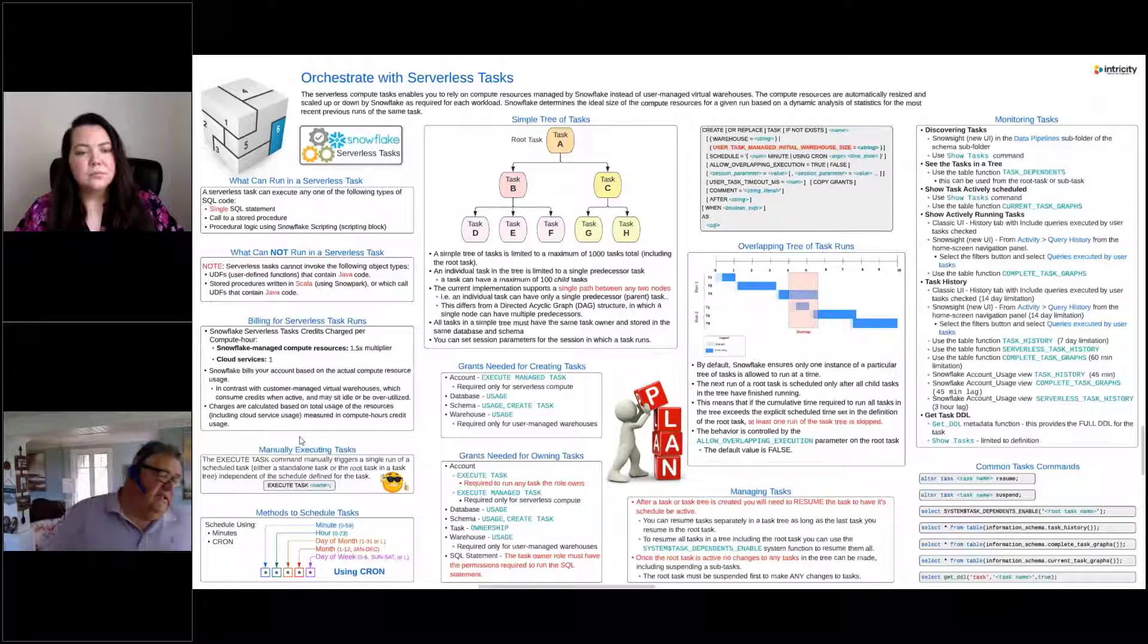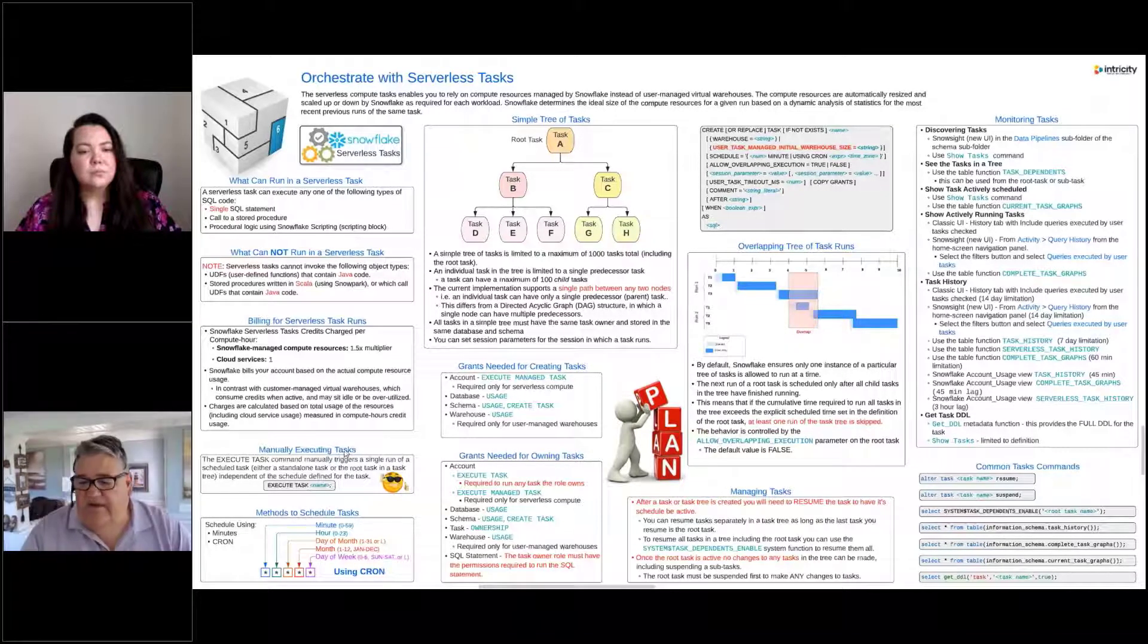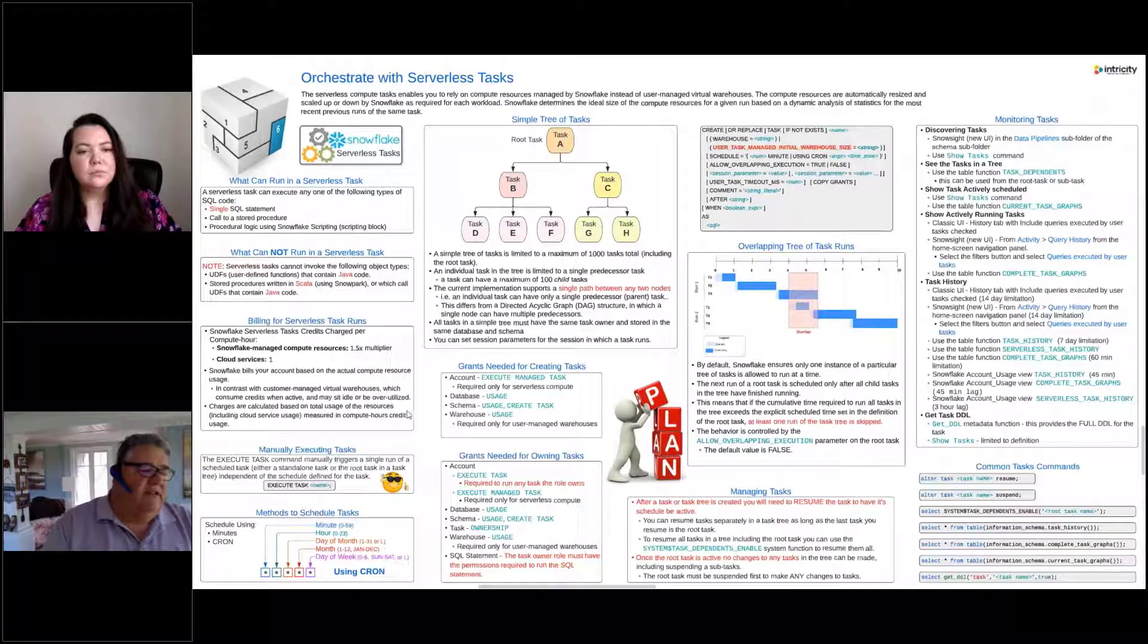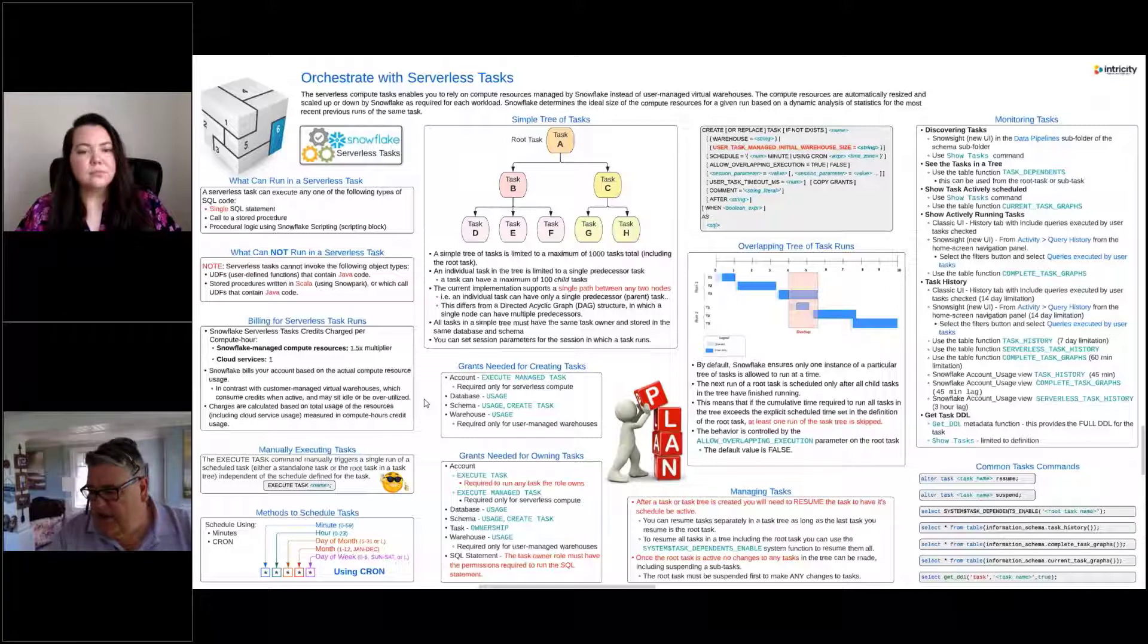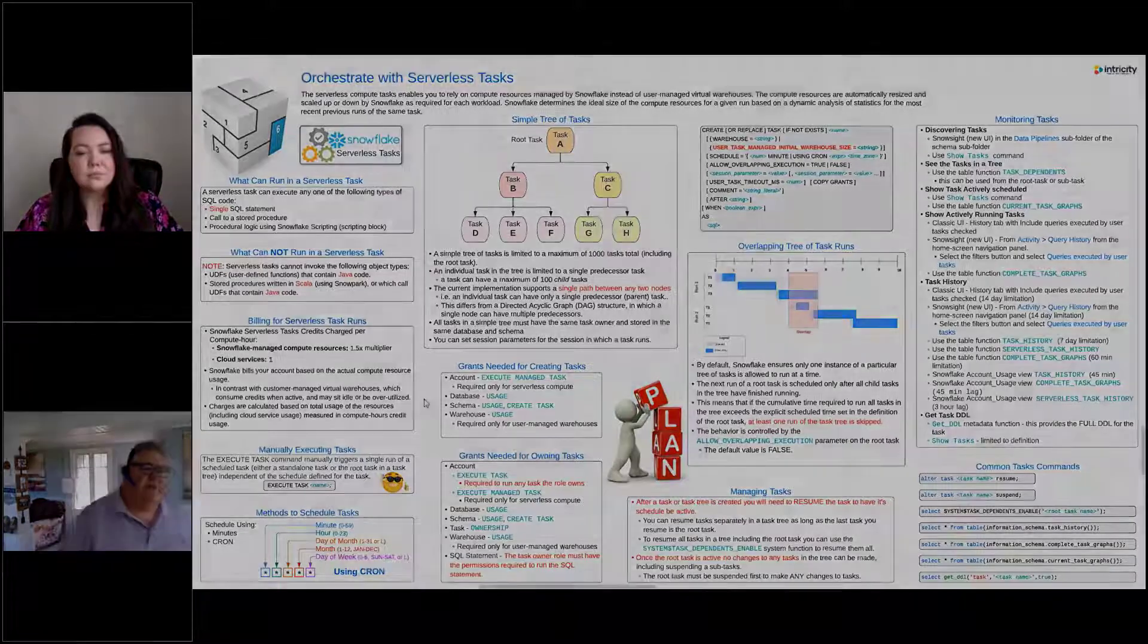We can also schedule tasks using minutes, so we could say run this task every 10 minutes, or every 60 minutes, or every five minutes, or we can schedule them using cron. So we could use cron and say we want this task to run on Monday and Wednesday and Friday at 3 a.m., or whatever it is that we want to do with our cron setup and schedule.